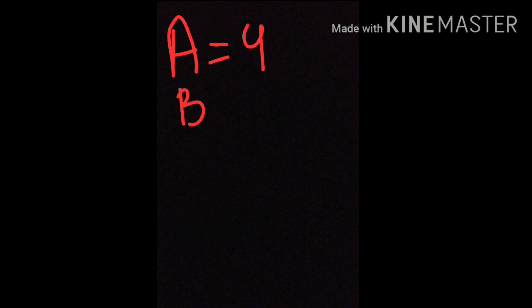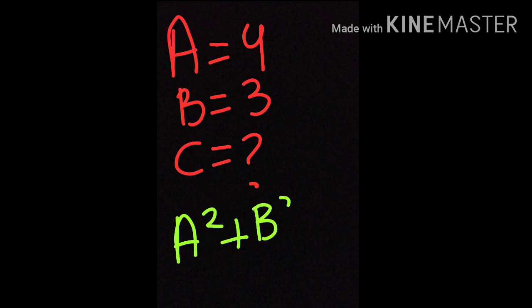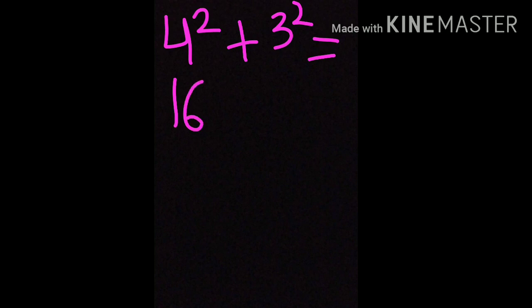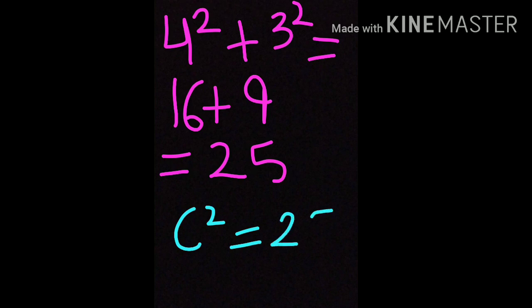Since A altitude equals 4, B base equals 3, we need to find the value of C by applying A squared plus B squared equals C squared. So 4 squared plus 3 squared, which is A squared plus B squared, is 16 plus 9, that is 25.